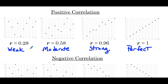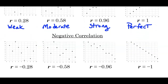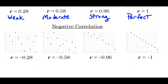As a rule of thumb, 0 to 0.3 we consider weak, 0.3 to 0.7 would fall into the moderate case, 0.7 to 1 but not including 1 would be strong, and a correlation coefficient of exactly 1 would be perfect. We can go through the same process for negative correlation.